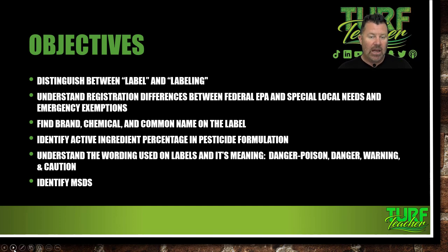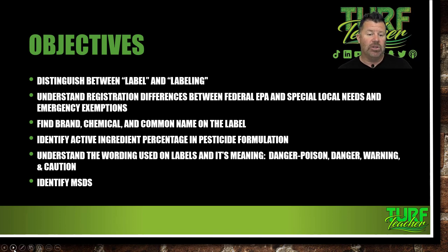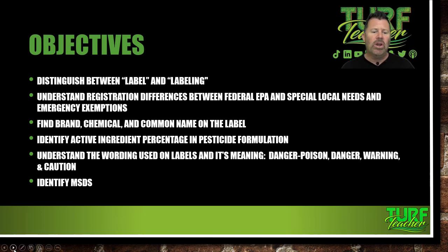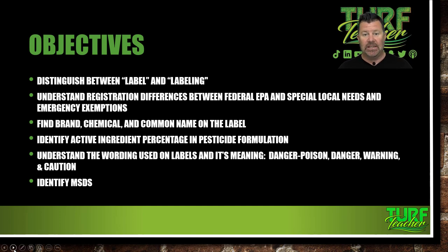Labeling is going to be pretty much any documentation that the manufacturer gives to representatives to give to you, the applicators in the field. Label is what's on the bottle — everything that's stuck and glued to it. We're going to understand registration differences between federal EPA and special local needs and emergency exemptions.